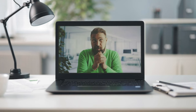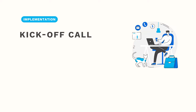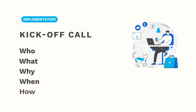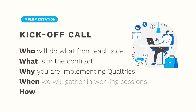Your implementer's first task is to schedule a kickoff call with you and your team. In the kickoff call, you will discuss who, what, why, when, and how — who will do what from each side, what the contract includes, why your business is implementing Qualtrics, when we will gather in working sessions, and how we will communicate in between those sessions.